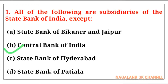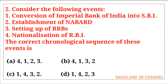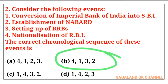Question number two: Consider the following events — number one, conversion of Imperial Bank of India to SBI; number two, establishment of NABARD; number three, setting up of RRBs; number four, nationalization of RBI. The correct chronological sequence is option number B, that is 4, 1, 3, 2 — meaning nationalization of RBI first, then conversion of Imperial Bank to SBI, then setting up of RRBs, and finally establishment of NABARD.